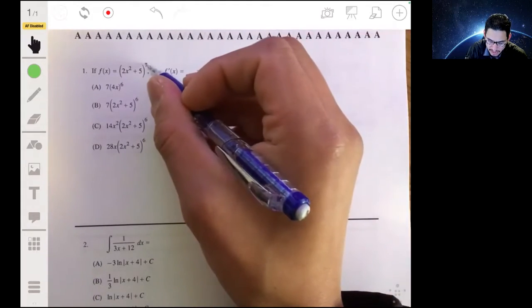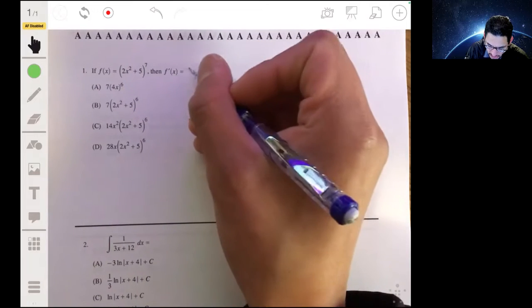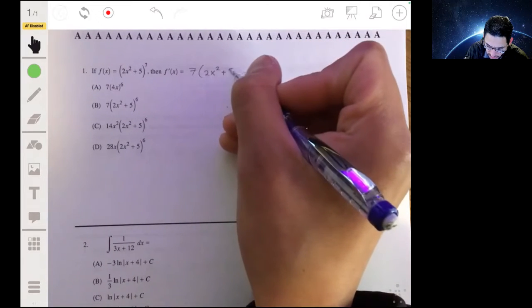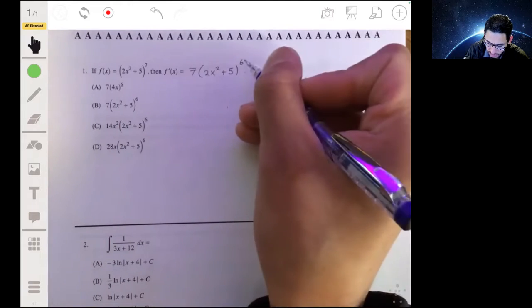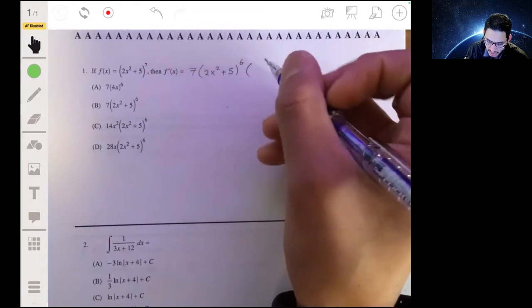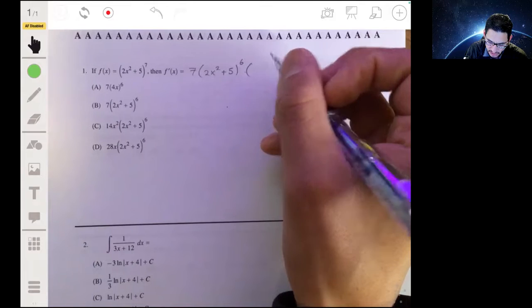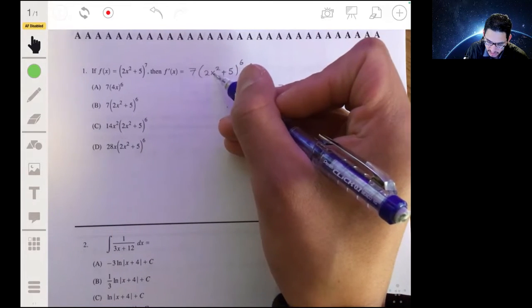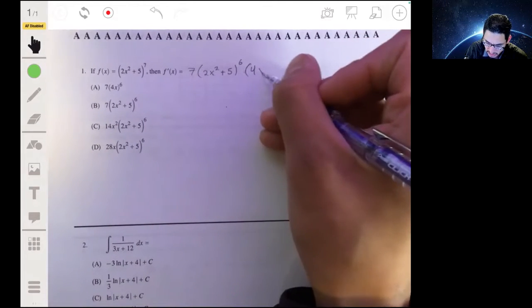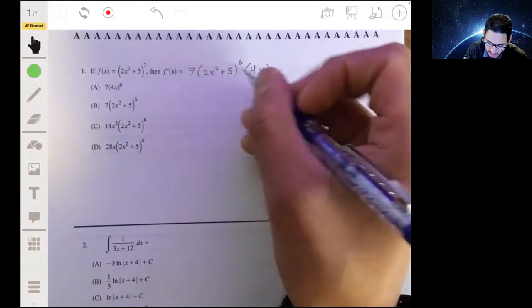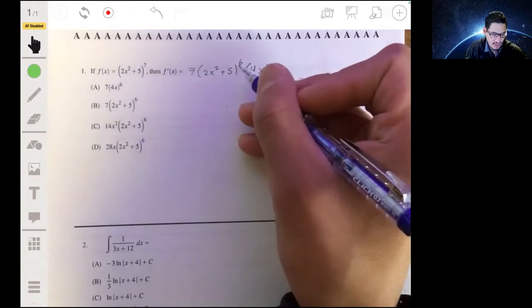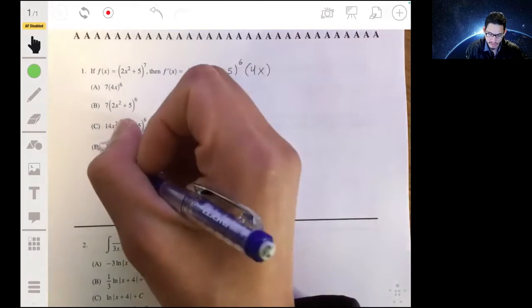So the derivative of the outside is basically seven times 2x to the fifth plus five to the sixth power. We keep the inside the same. We multiply this by the derivative of the inside, which is going to be 4x. And you'll get 28x times 2x squared plus five to the sixth. So your answer will be d.